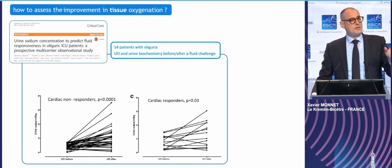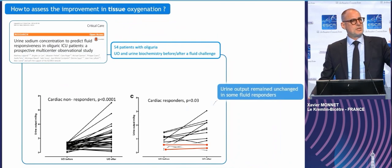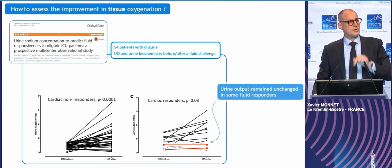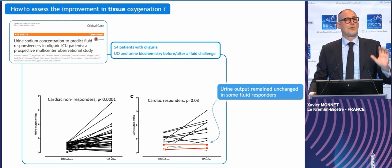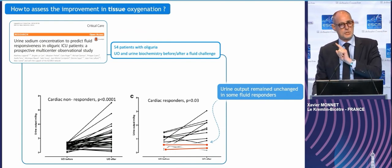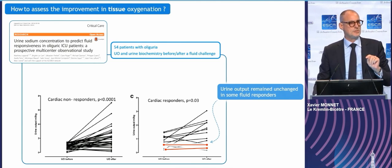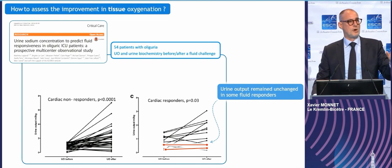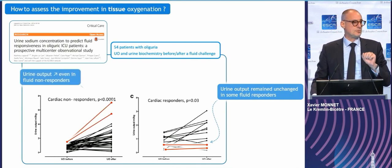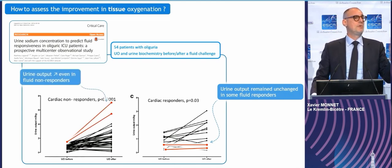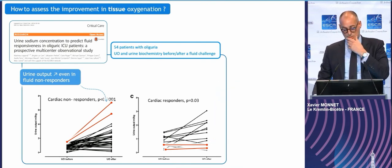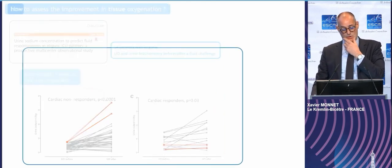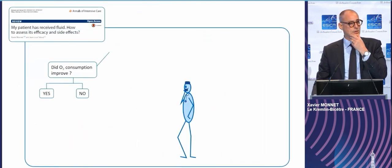In this study, patients were separated between cardiac output responders and non-responders. Urine output in some responders did not change — these were all oliguric patients, not anuric. And in patients with no response of cardiac output, urine output improved. Urine output is far from cardiac output and is not a reliable estimation of the effects of fluid on organ function.